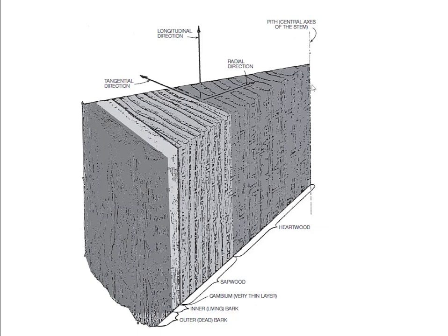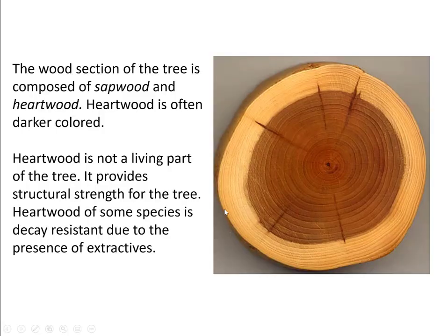The color of the pith ranges from black to white, and the pith structure can be solid, porous, or hollow depending on the tree species. The wood section of the tree is composed of sapwood and heartwood. The darker area around the center is the heartwood, and the lighter ring on the outside is the sapwood.